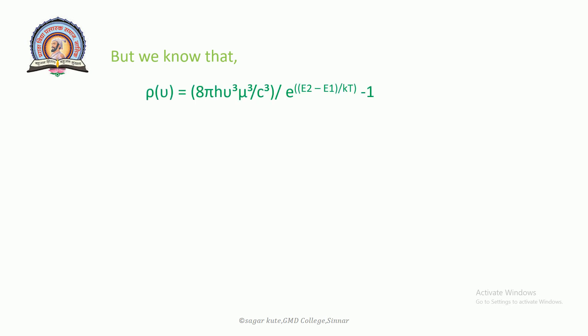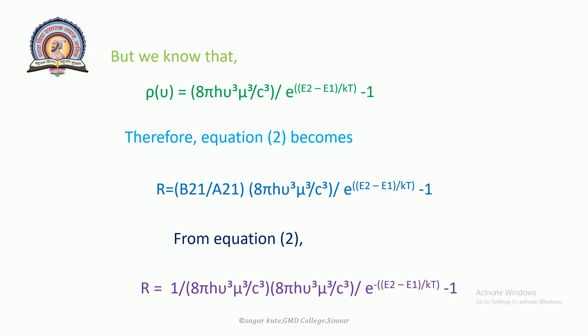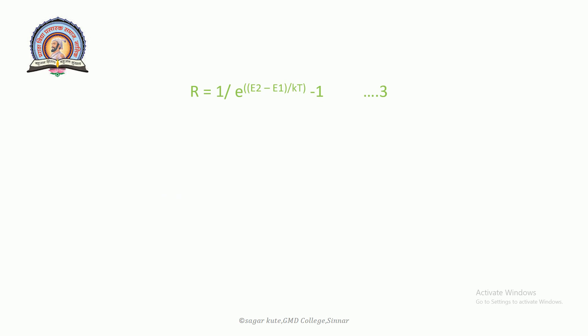Substituting the Einstein relation into equation 2: R = (B21 / A21) · ρ(ν), and using A21/B21 = 8πhν³/c³, we get R = 1 / (e^(hν/kT) − 1). This simplifies further to R = 1 / (e^((E2−E1)/kT) − 1). This will be equation number 3.